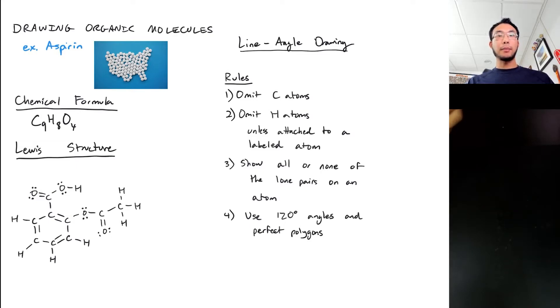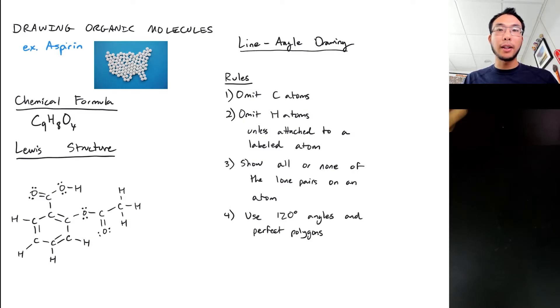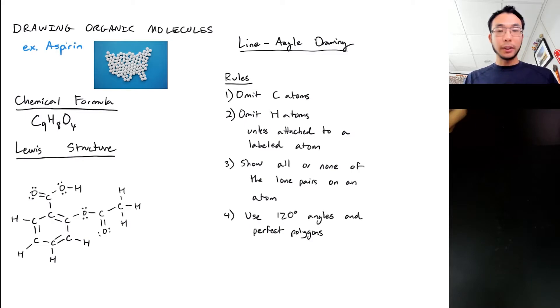Finally, we try to make these drawings look neat by using nice regular angles — often 120-degree angles. We like to use perfect polygons when it comes to rings. So let me show you what this looks like for aspirin.